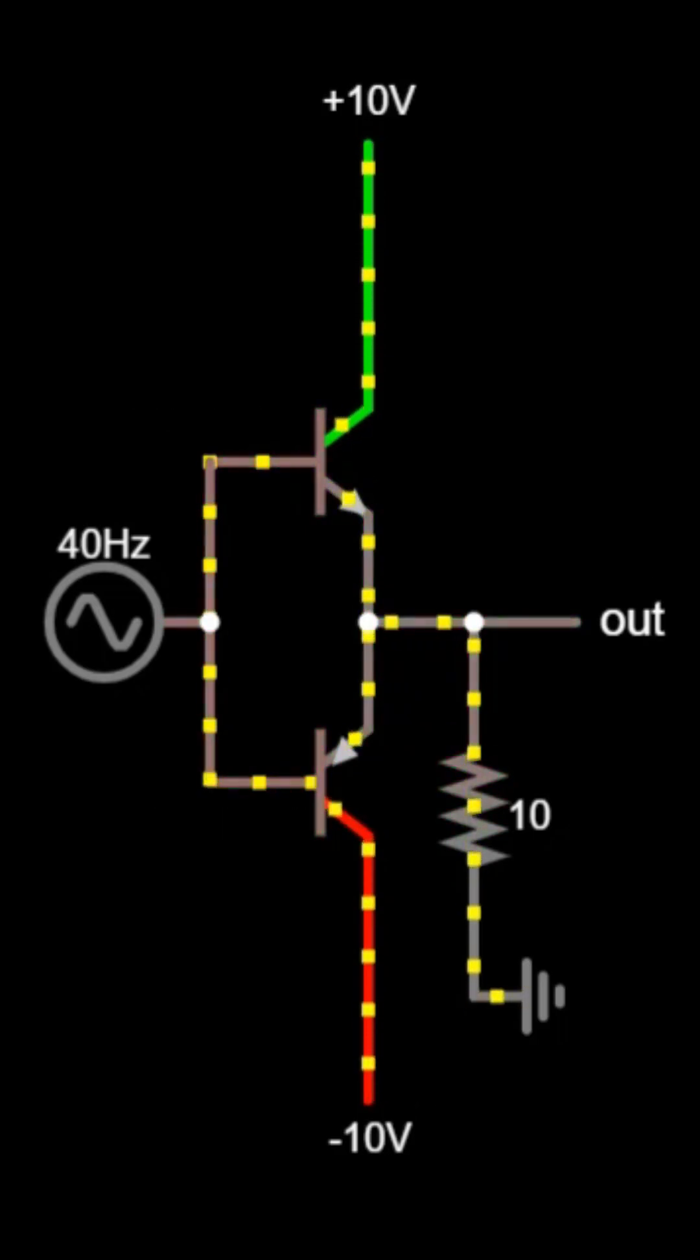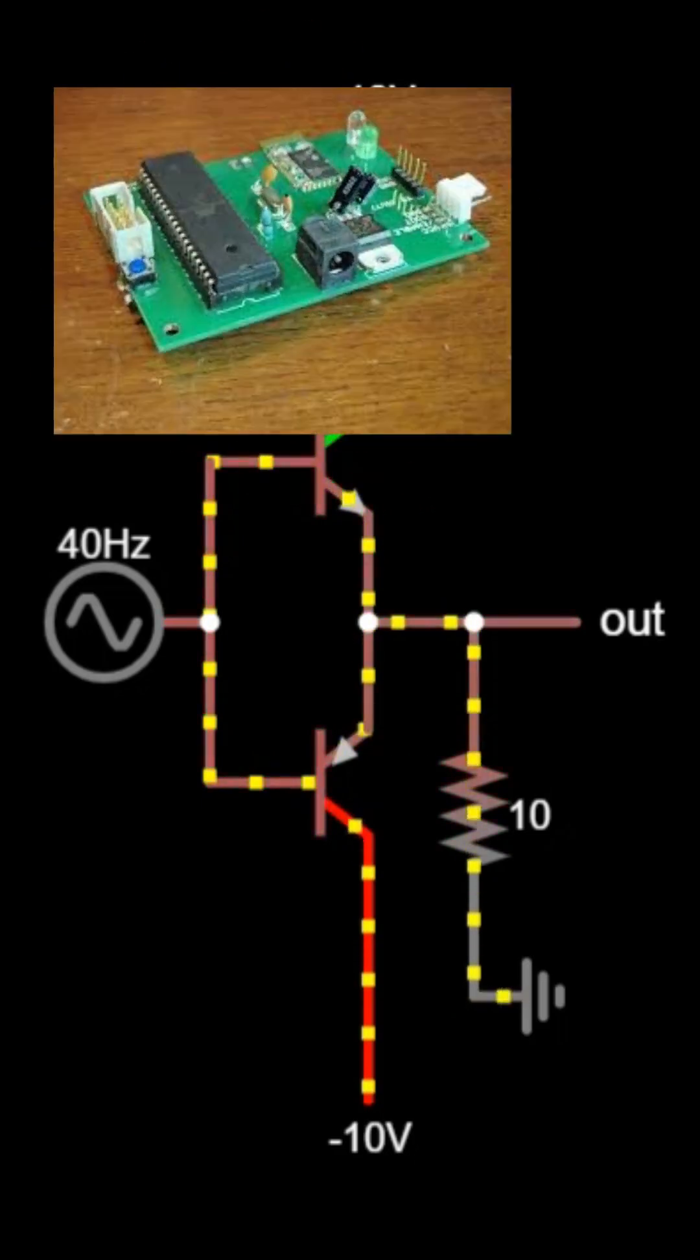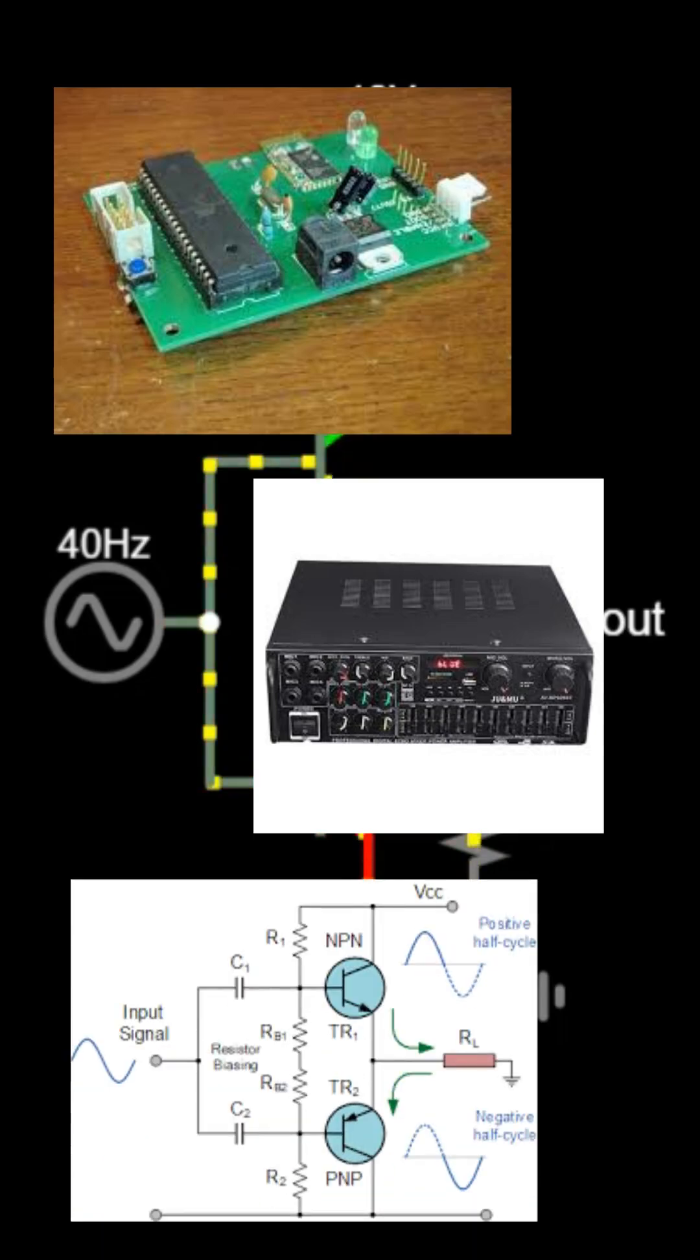That's why it's called a Push-Pull Circuit. Push-Pull Circuits are widely used in amplifiers, audio systems, and Class B output stages because they reduce distortion and improve efficiency.